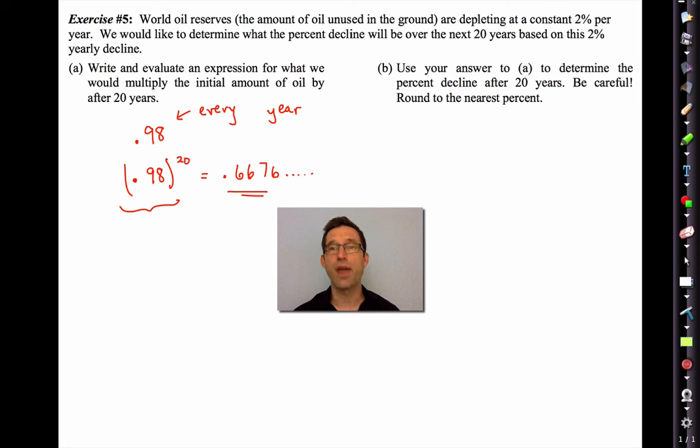Now, this is tricky. Letter B says, use your answer in A to determine the percent decline after 20 years. Be careful. Round to the nearest percent. A lot of my students, even high level students will look at that answer for part A and go, it declined by 66.8%. No, that's not true. That's actually what's left over. We have, let's say, 66.8% left over. The percent that's declined will be 100% minus 66.8%.